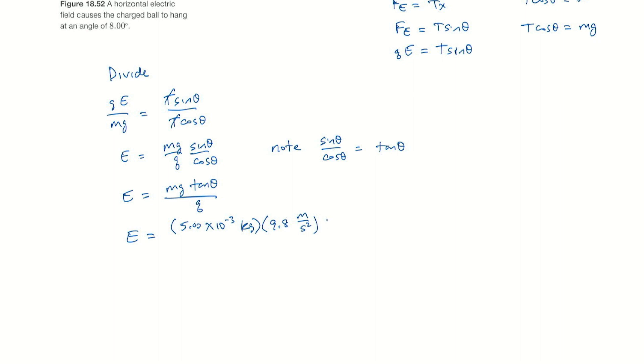We've got the tan of 8.00 degrees. We're dividing by q which was one microcoulomb, 1.00 times 10 to the minus six coulombs.